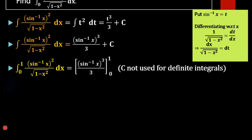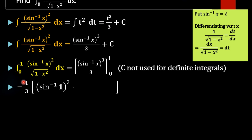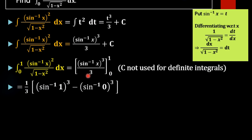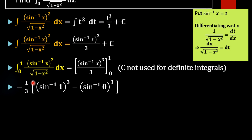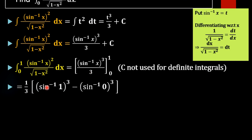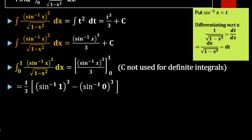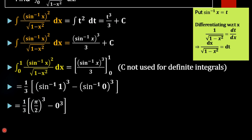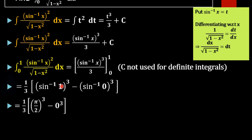On applying the limits, we get 1 by 3 into sin inverse of 1 whole cubed minus sin inverse of 0 whole cubed. Sin inverse of 1 is pi by 2, since sin(pi/2) equals 1. So we get 1 by 3 into pi by 2 whole cubed minus 0 cubed.